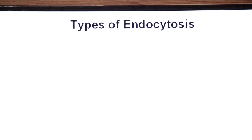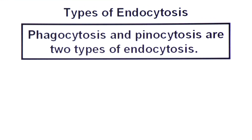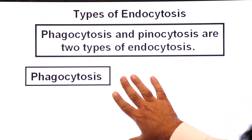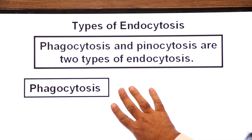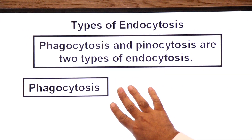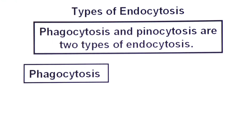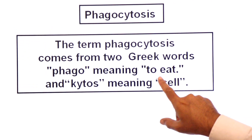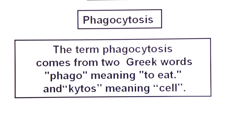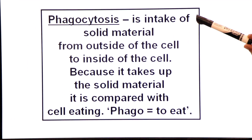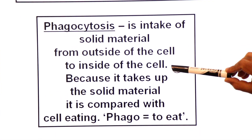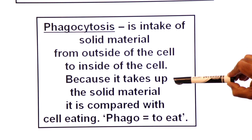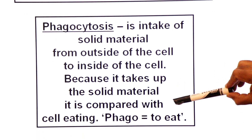Phagocytosis and pinocytosis are the two types of endocytosis. Phagocytosis means cell eating. The uptake of solid material by the cell is called phagocytosis. The term phagocytosis comes from two Greek words: phago meaning to eat, and kytos meaning cell. The definition of phagocytosis is the intake of solid material from outside the cell to inside the cell.